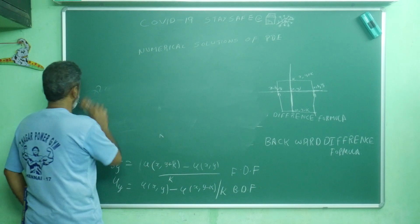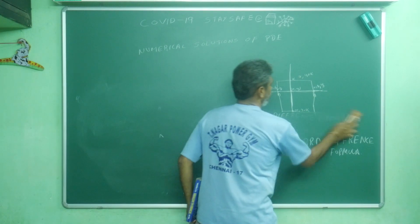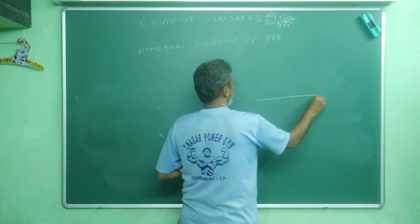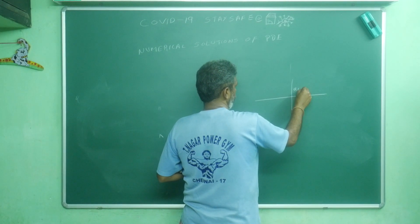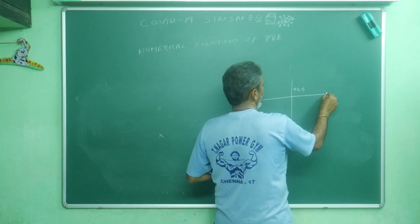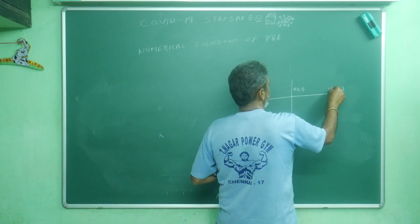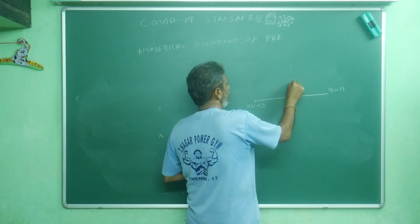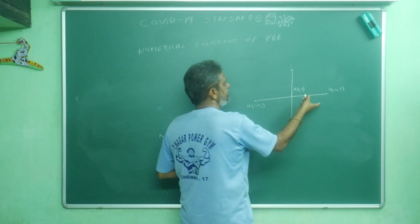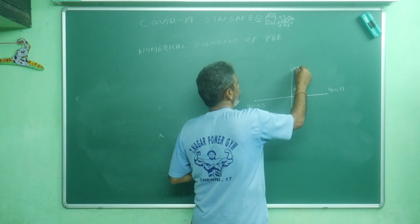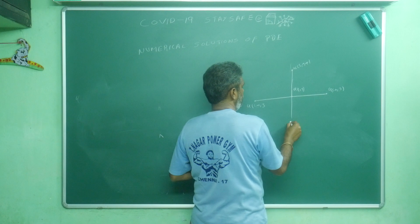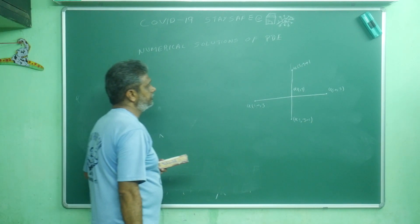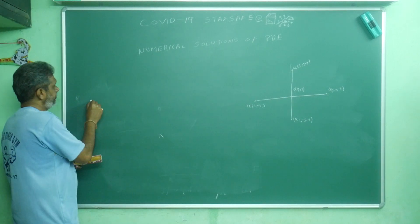I use the notation i for the x-direction and j for the y-direction. So a point u(x, y) is written as u_{i,j}. Moving in the x-direction: u(x+h, y) becomes u_{i+1,j}, and u(x−h, y) becomes u_{i−1,j}. Moving in the y-direction: u(x, y+k) becomes u_{i,j+1} and u(x, y−k) becomes u_{i,j−1}.